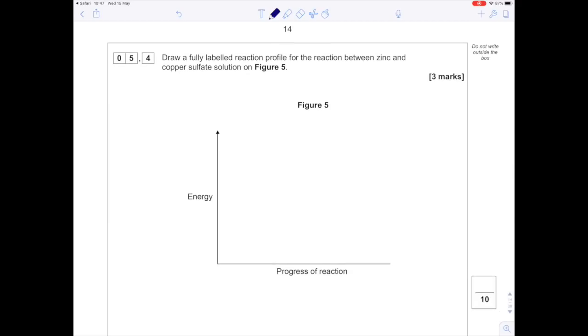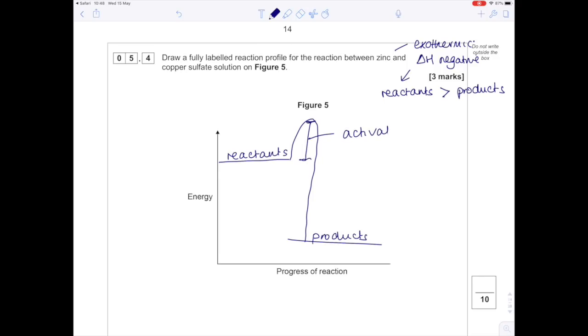Draw a fully labeled reaction profile for the reaction between zinc and copper sulfate solution. This is exothermic, which means the energy change is negative and the reactants have more energy than the products. So the reactants start at a higher energy. We need to show the activation energy from the reactants to the top of the peak, and the overall energy change from reactants to products. As you can see, this decreases, which is why delta H is negative and it's exothermic.